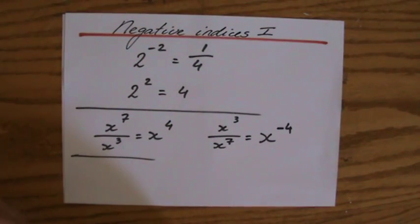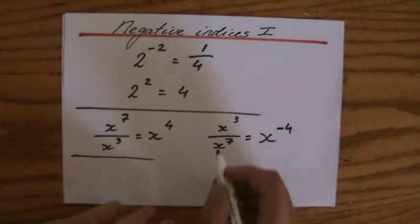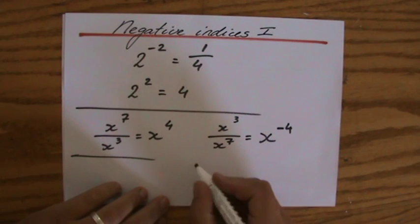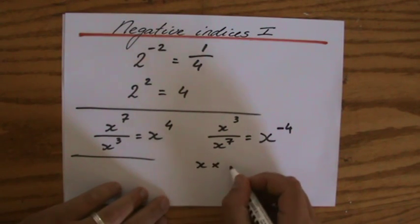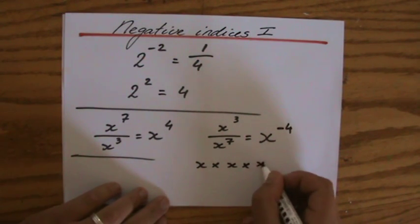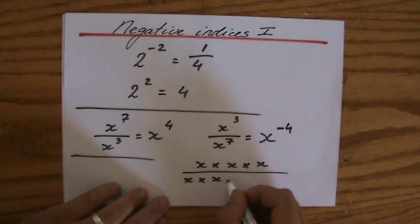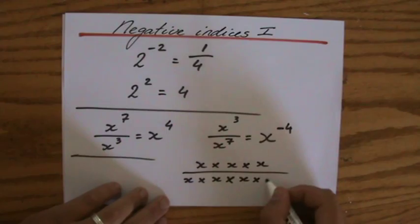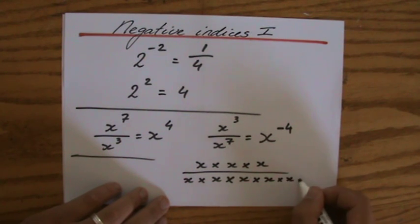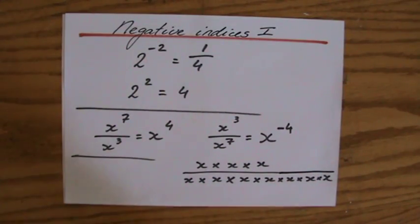A negative index. Now if I would write this out: x times x times x, x to the power 3, over x times x times x, 3, 4, 5, 6, 7. Perhaps a bit confusing with all those x's and times x, but I hope you can follow me.